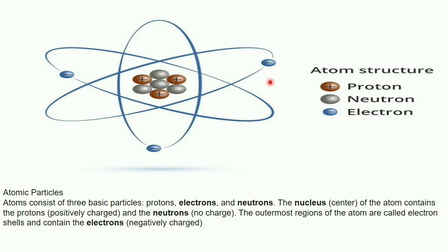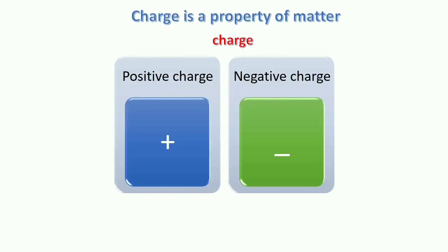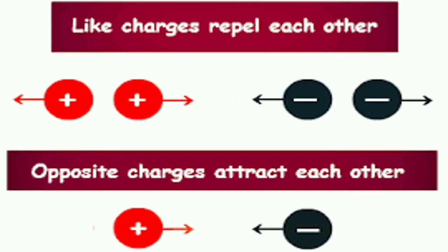An atom is neutral by nature as they have equal numbers of protons and electrons. Charge is a property of matter just like mass, volume, or density. A positively charged atom is called a positive ion and a negatively charged atom is called a negative ion. Like charges repel each other and unlike charges attract each other — both positive-positive or negative-negative charges repel, while opposite charges, positive and negative, attract each other.